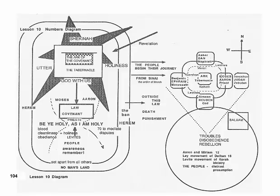On our diagram, then, we have the Ark of the Covenant, central now to the Shekinah, God with us. And around it are two dark lines.